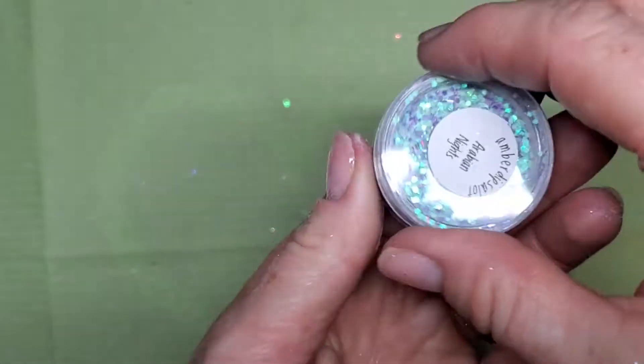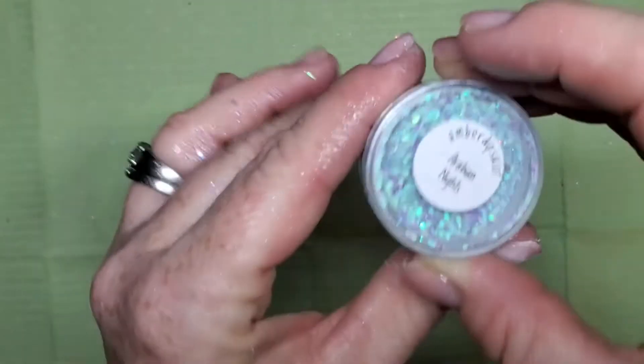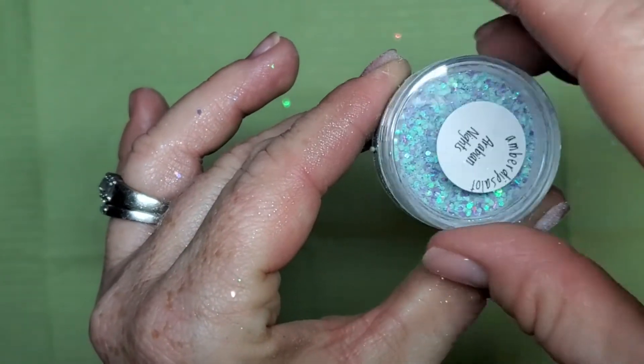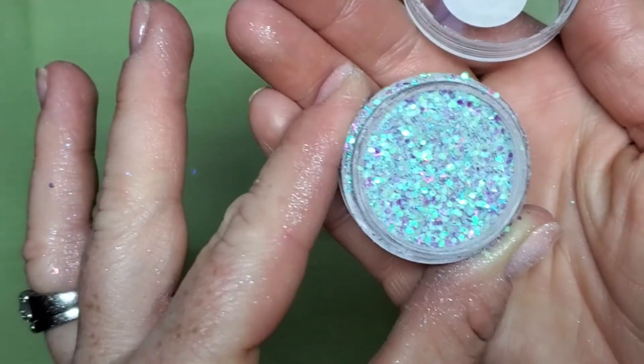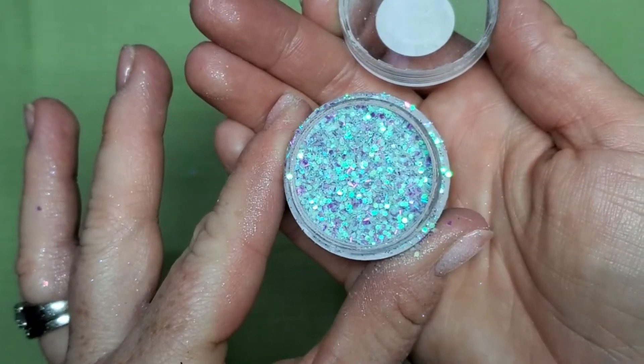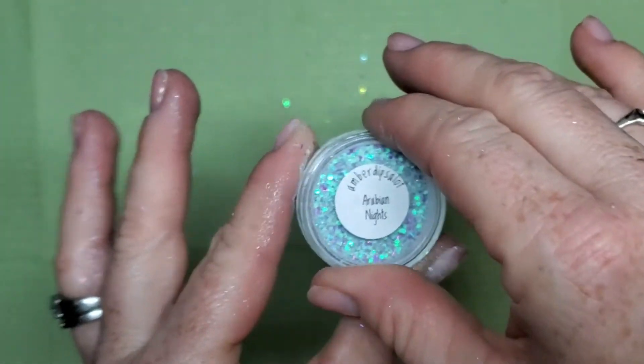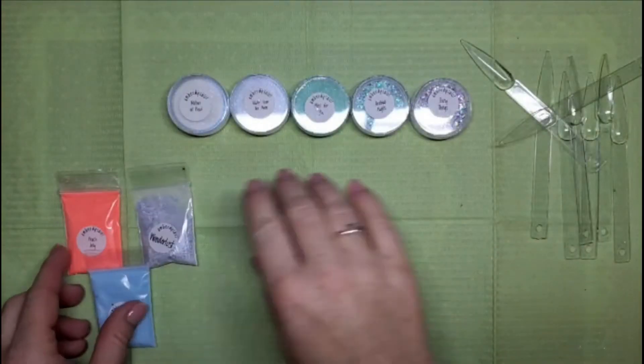And the last one here is Arabian Nights. This one, oh it looks so beautiful when she showed it on Instagram. Oh it's super pretty. It's got like purple and green and oh my gosh, that's gorgeous. Super pretty!